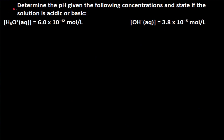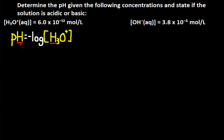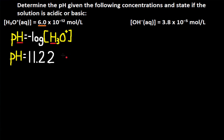Determine the pH given the following concentrations and state if the solution is acidic or basic. H3O+ is equal to 6.0 times 10 to the negative 12 moles per liter. pH is equal to the negative log of H3O+, so we take the negative log of 6.0×10⁻¹², getting a pH of 11.22. For sig digs, H3O+ has two sig digs, so pH has two decimal places. A pH greater than 7 is basic, so the solution is basic.